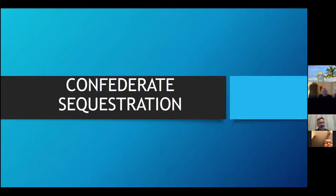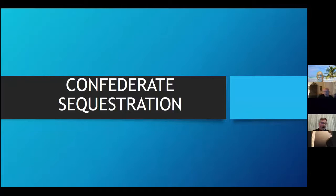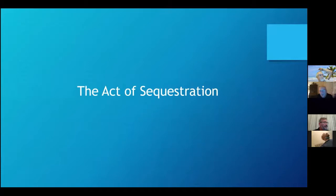Confederate sequestration. During the Civil War, shysters and con men abounded on the southern home fronts. Arguably, the greatest concentration of villainous characters were found within the halls of Confederate justice. District court judges, receivers, and grand juries, armed with the Confederate act of sequestration, presided over a campaign of confiscation and intimidation to enforce loyalty and squelch dissent.